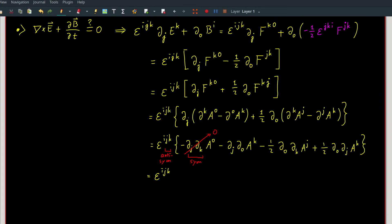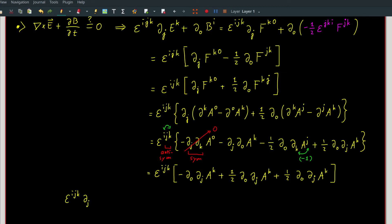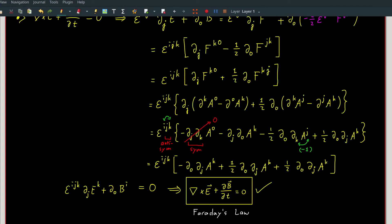For this second term, we can rename the index k to be j and j to be k. But at the same time, we need to swap the order of j and k in the epsilon, giving us a factor of negative 1. We can finally sum up all the addition and subtraction in the bracket, which all sums out to 0. Therefore, the curl of E plus time derivative of B is equal to 0. And this is Faraday's law. QED. Thank you.